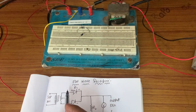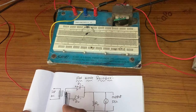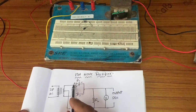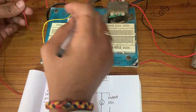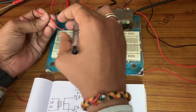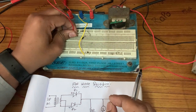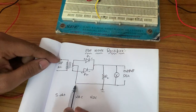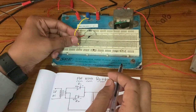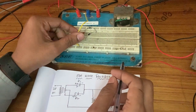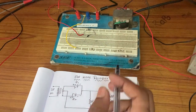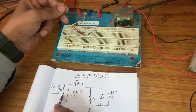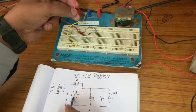Now, if you see the circuit, the transformer has three terminals: 1, 2, and 3. Transformer terminal 1 is connected to diode 1 anode. Transformer terminal 2 is connected to ground. Transformer terminal 3 is connected to the second diode anode. I am connecting transformer terminal 2 to the ground.